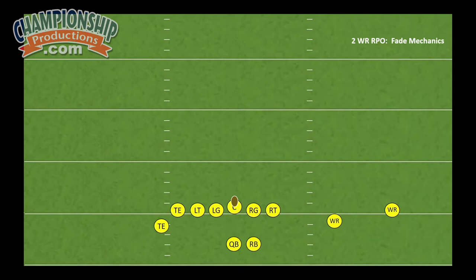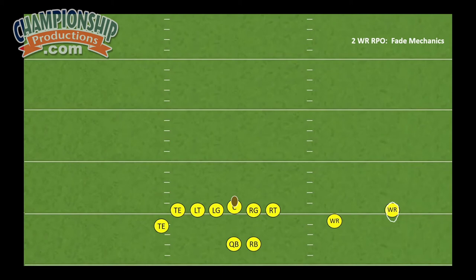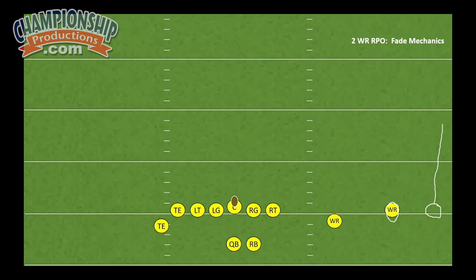First things first — we all know these two receivers are aware they are running the fade route. The first thing is this receiver should cut his split down and should never be lined up wide. We have to give the quarterback room to throw the football. If we're lined up wide trying to run a fade, the quarterback has nowhere to throw the ball. All he can do is hope that his receiver either runs past the cornerback or out jumps the cornerback — neither of which are great probabilities for the offense.